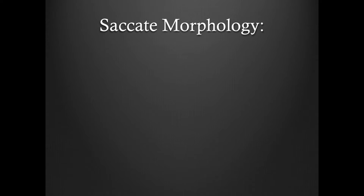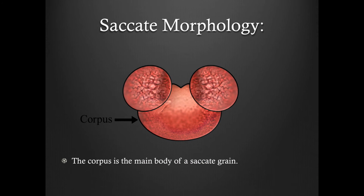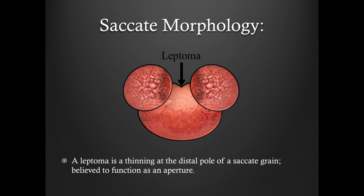Now let's talk about saccate morphology. A sacus is an air sac protruding from the body of a saccate grain. The number of sacs may vary from one to three. The corpus is the main body of a saccate grain. The leptoma is a thinning at the distal pole of a saccate grain and it is believed to function as the aperture.